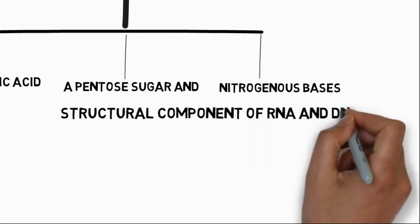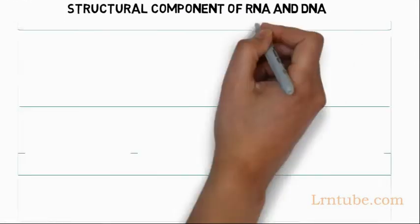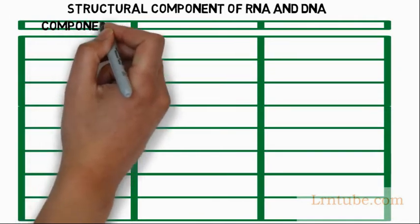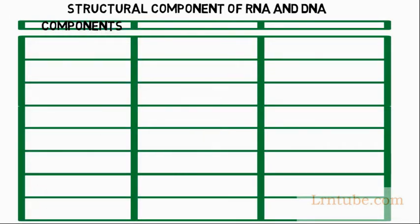When represented in a tabular form, let's draw a table. One part we call a component, one part is for RNA, and one part is for DNA. The three components are phosphoric acid, a pentose sugar, and nitrogenous bases.